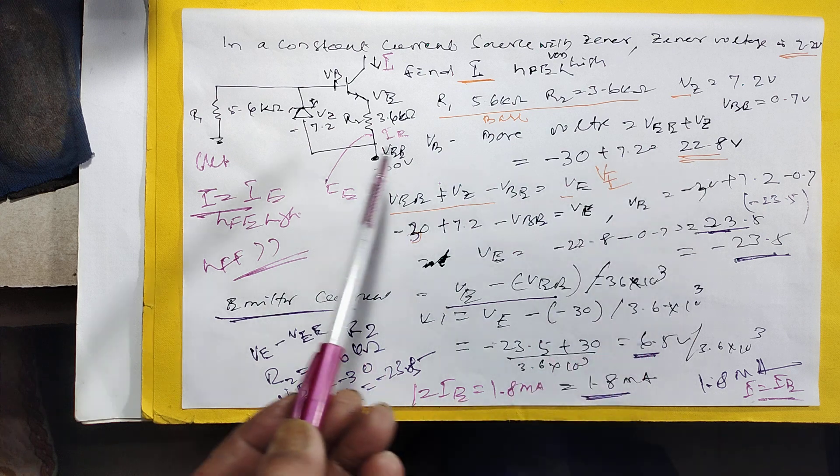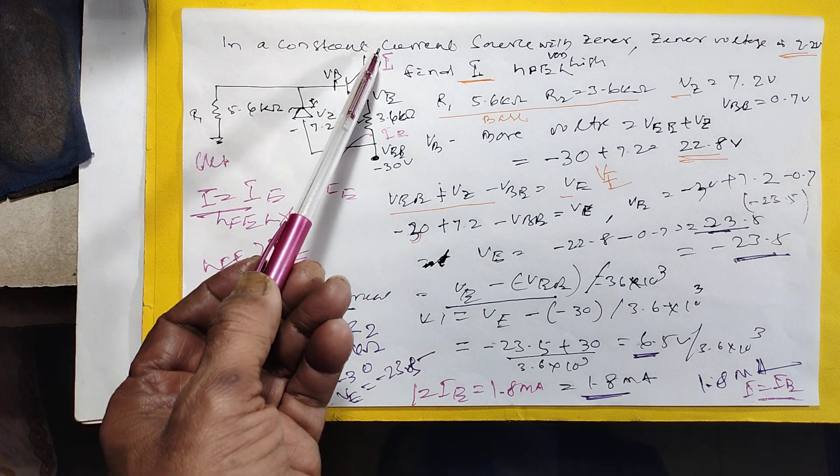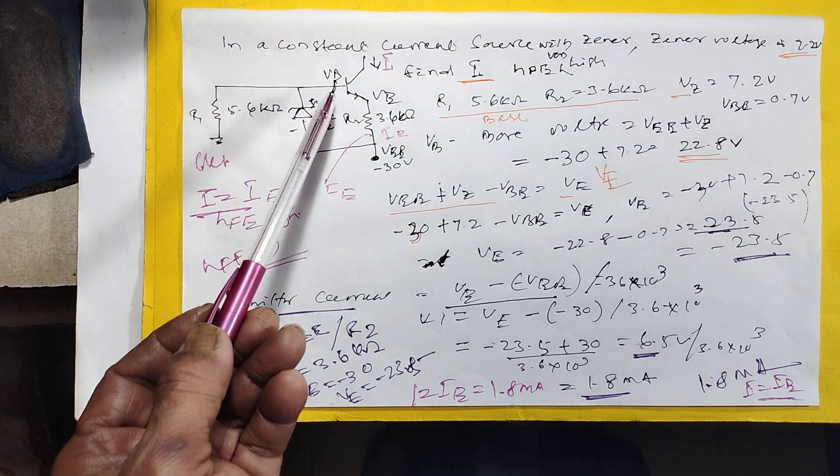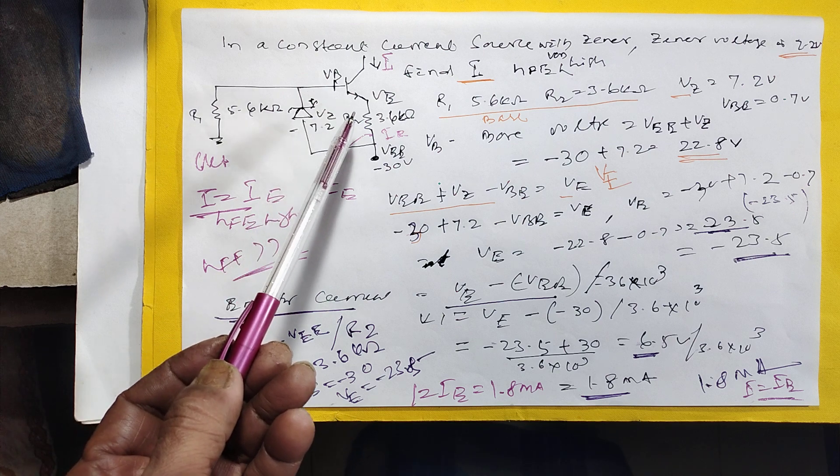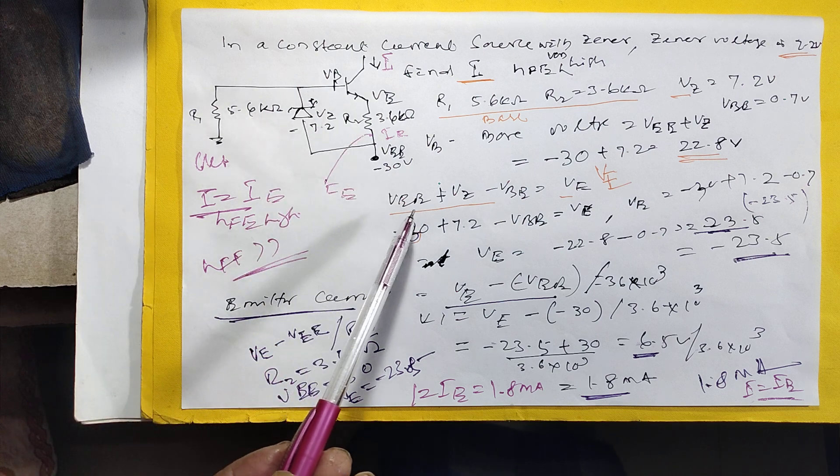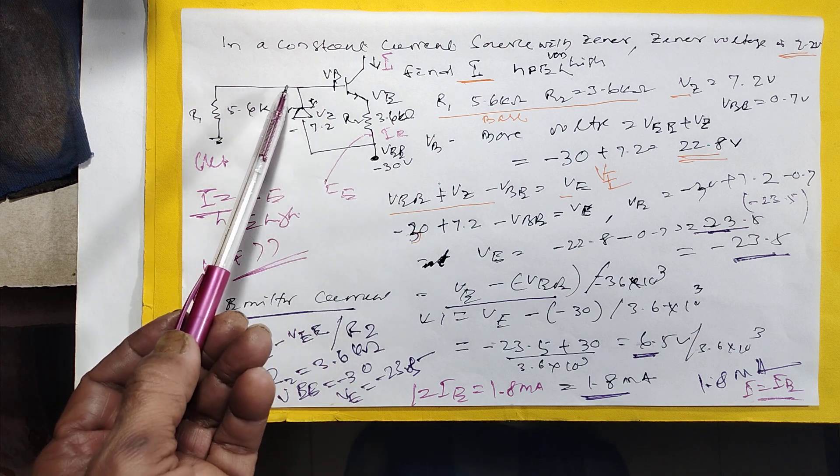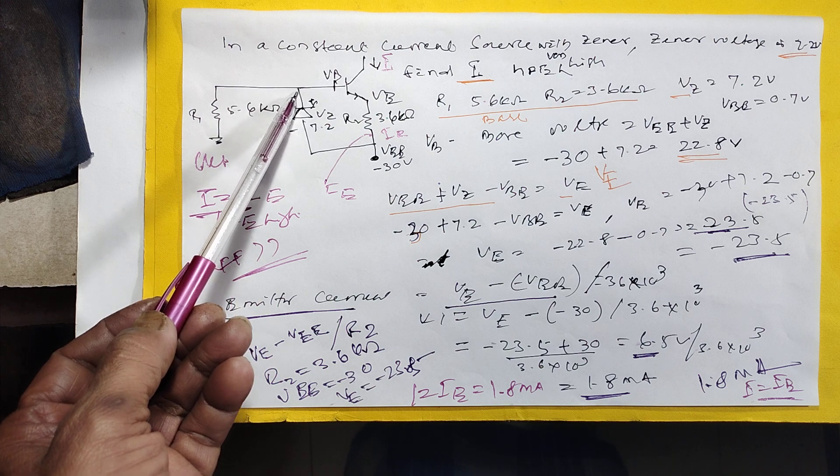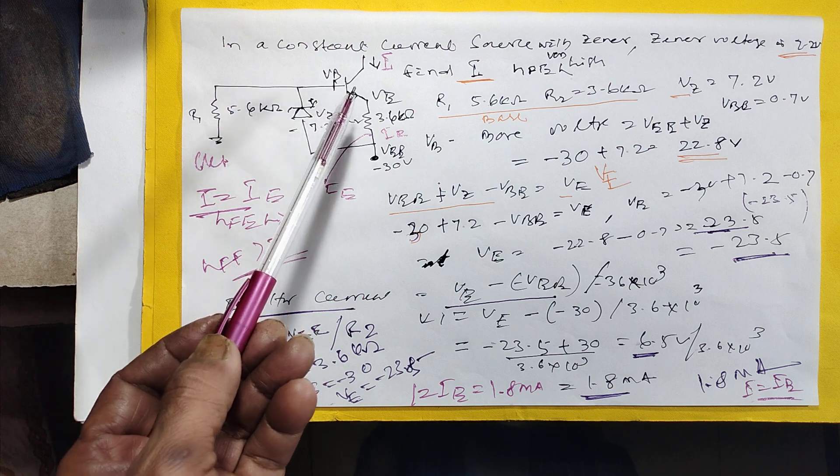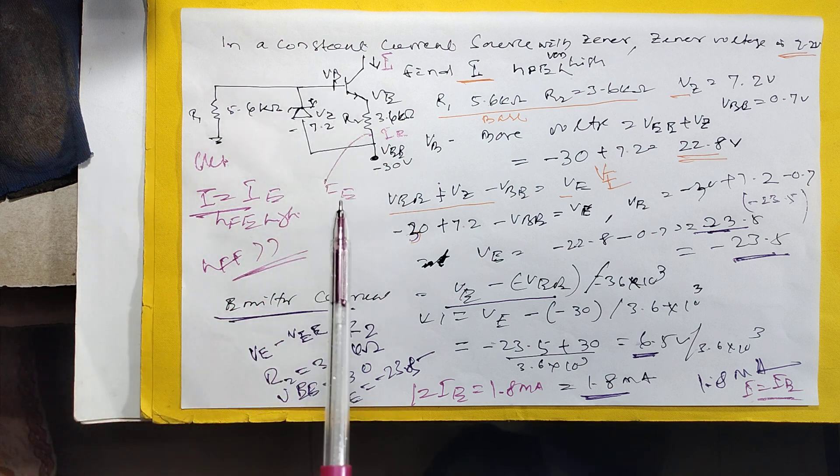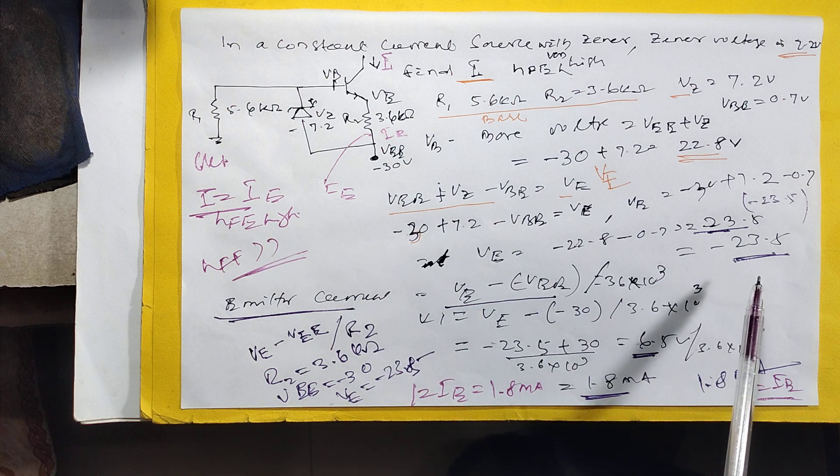Then we come to VE. Because I want to calculate IE, I want to know the current I. VE equals VB minus VZ.